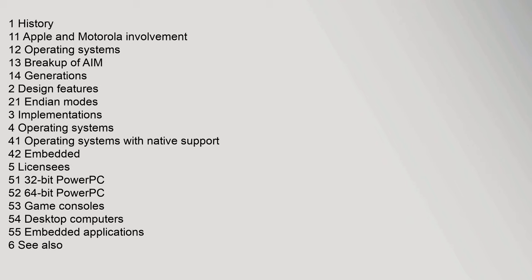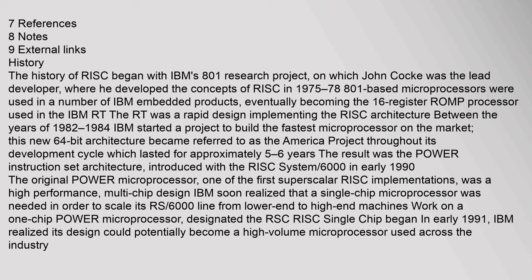The history of RISC began with IBM's 801 research project, on which John Cocke was the lead developer, where he developed the concepts of RISC in 1975 to 1978. 801-based microprocessors were used in a number of IBM embedded products, eventually becoming the 16-register ROMP processor used in the IBM RT. The RT was a rapid design implementing the RISC architecture between the years of 1982 to 1984.